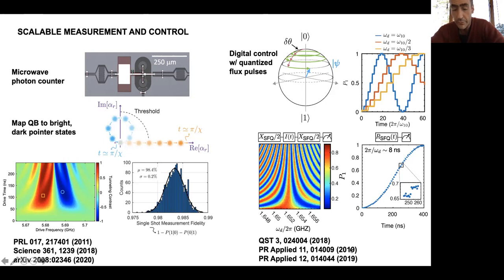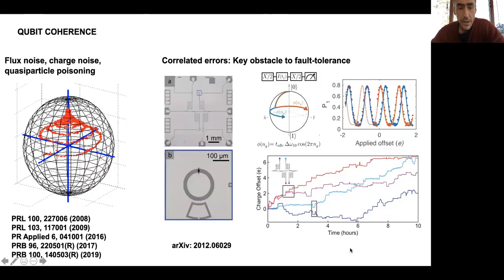And you can read about some of our latest results in these papers. We have a long-standing effort to understand and mitigate the underlying materials sources of decoherence in superconducting qubits. Materials defects give rise to flux noise, charge noise, and quasi-particle poisoning. This is excitations out of the superconducting ground state that damage the performance of the qubit.